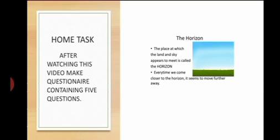The horizon. Now kids, what is a horizon? The place at which land and sky appear to meet is called the horizon. It's not the place where they actually meet. We feel that they appear to meet. Every time we come closer to the horizon, it seems to move further away because it is the point where it is only appearing to meet.